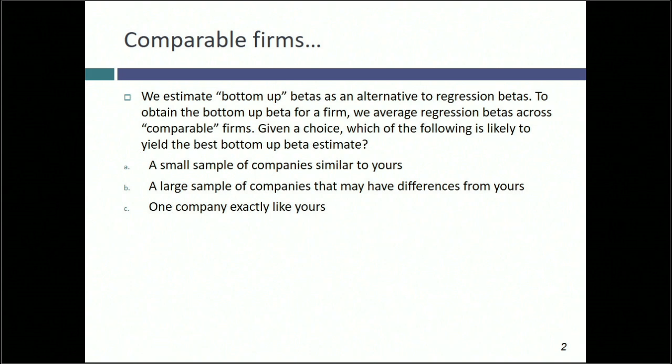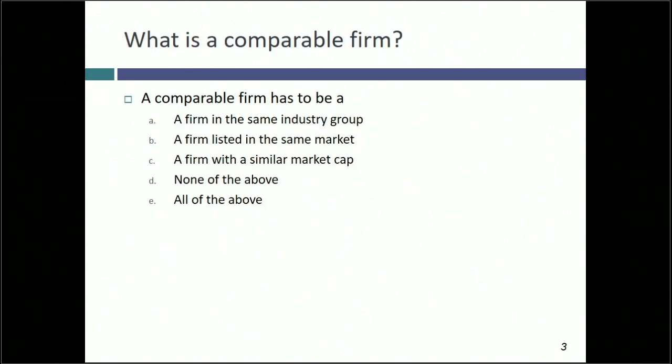So if you ask me to estimate a beta for an Indian steel company, I might not just look at other Indian steel companies — I might look at global steel companies. When you think about a comparable firm for this analysis, do you want a company in the same industry group? Should it have roughly the same market cap? With each criterion you add, the good news is you're getting a company closer to yours, but the bad news is the sample size is shrinking.